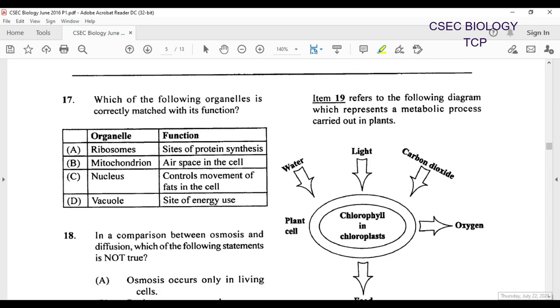We move on now to item 17. This is pretty much in the form of a table. You would have done a lot of practice with tables back in your SBA where you looked at the food tests. For item 17, which of the following organelle is correctly matched to the function? Let's look at ribosome site of protein synthesis. Mitochondria, that's pretty much the site for cellular respiration. Nucleus controls pretty much a lot of things. Vacuole the site of energy, no. So of course our answer here is going to be A for 17.